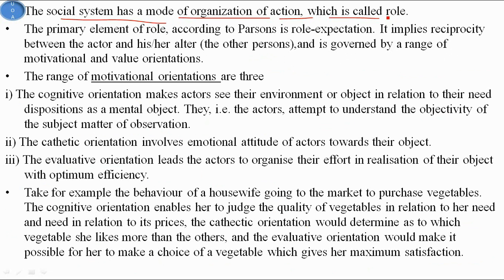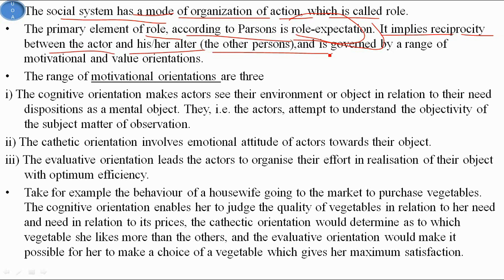The social system has a mode of organization of action called a role, or role relationship, or role expectations. The primary element of role according to Parsons is role expectation. Role relationship implies direct reciprocity between the actor and the alter. The actor is called ego and the other person or object is called alter — this is the ego-alter relation, and it is governed by a range of motivational and value orientations.